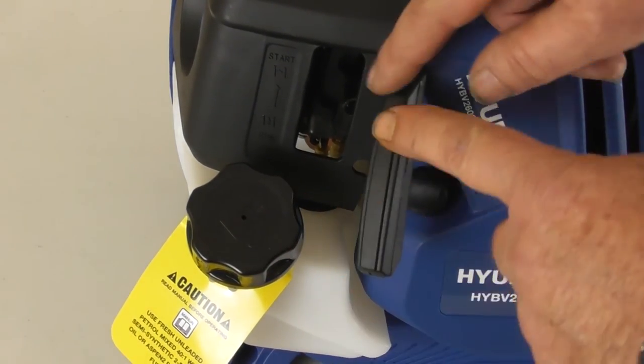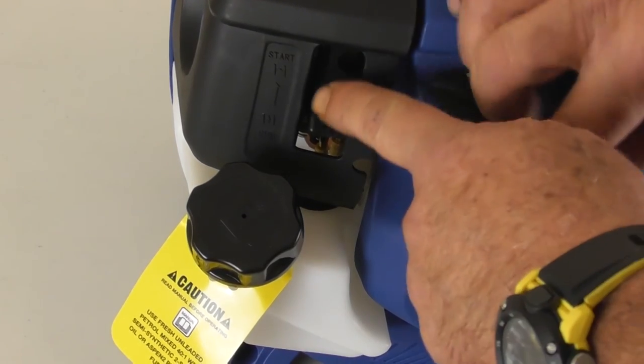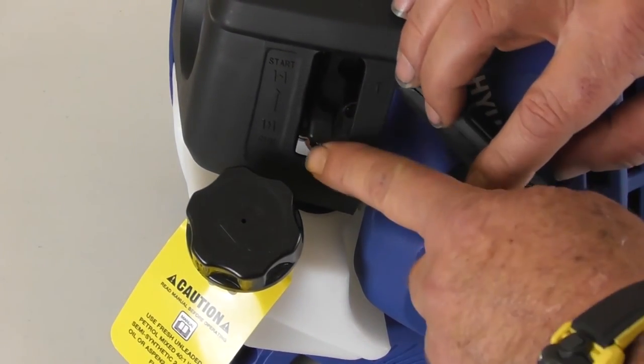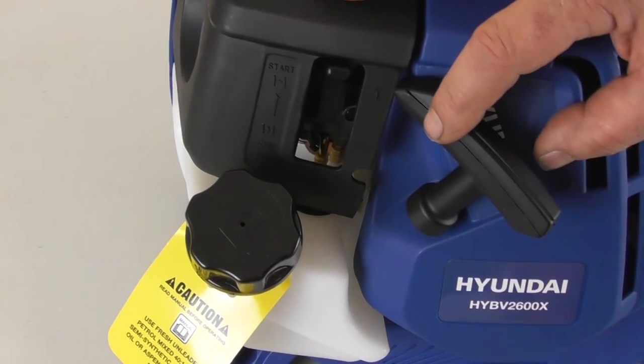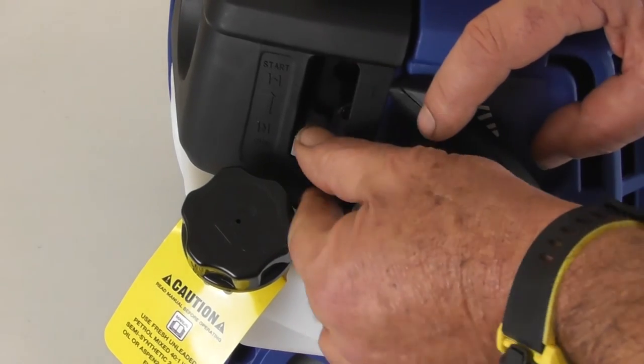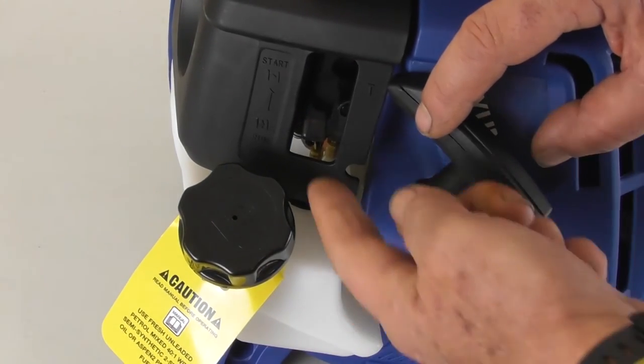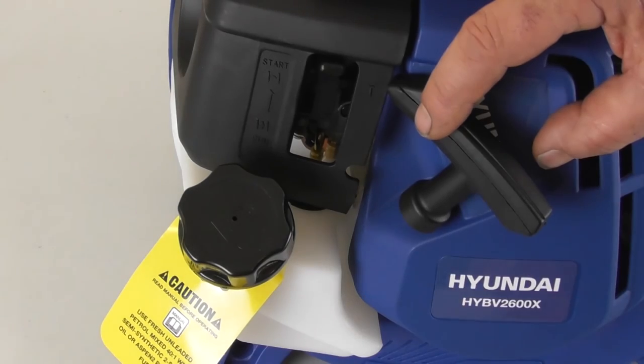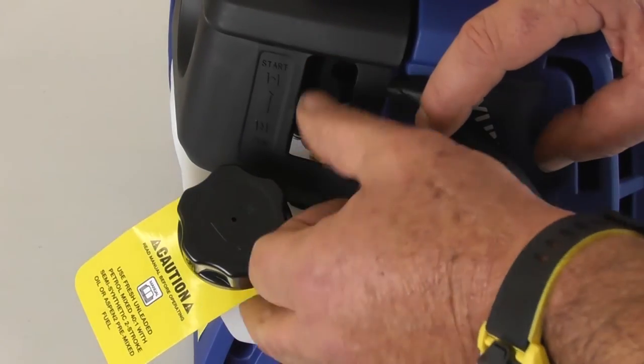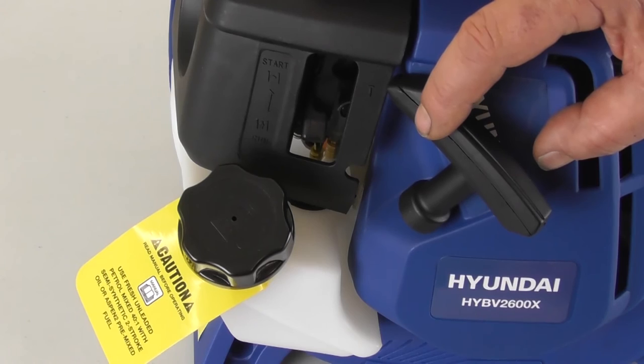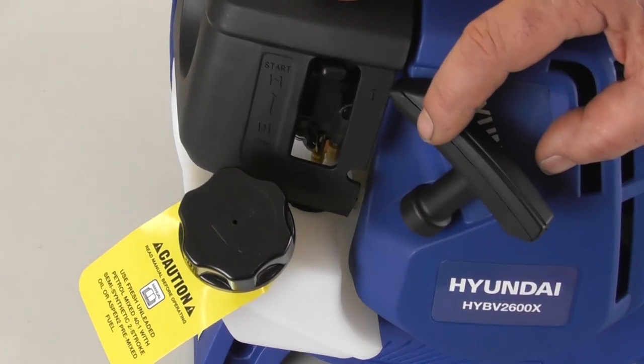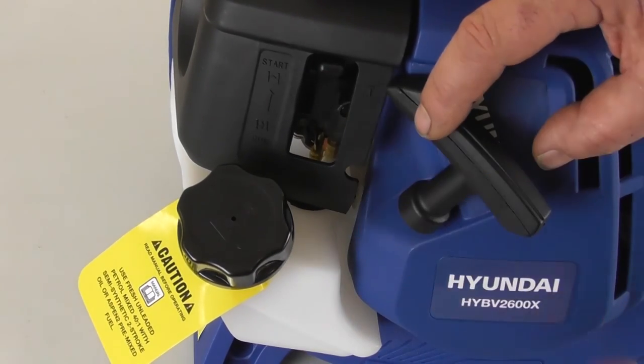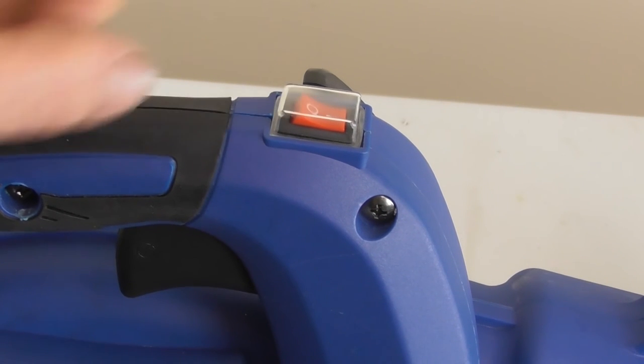Now you'll notice here behind the recoil handle, we have the choke lever. To start the engine from cold, you need to push the choke lever up. Once the engine starts, we push the choke lever down. So for a cold start, we'll put the choke lever up. For a warm start, if you've been running the machine and you've stopped it for whatever reason and you're going to restart it again fairly quickly, you wouldn't need to use the choke facility. But for a cold start, the choke on, which is in the up position.